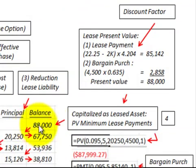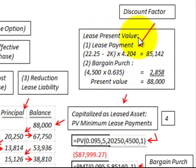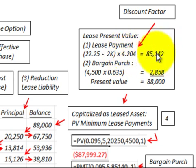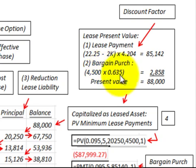Next, we calculate the capitalized amount of the lease, which is $88,000, equal to the present value of the minimum lease payments. The lease payments — $22,250 less $2,000 executory costs — give a minimum lease payment of $20,250. Using the discount factor, the present value of those five payments is $85,142. The second component is the bargain purchase option of $4,500 discounted back five years, worth $2,858. Together, the present value of the minimum lease payments with the bargain purchase option is $88,000.